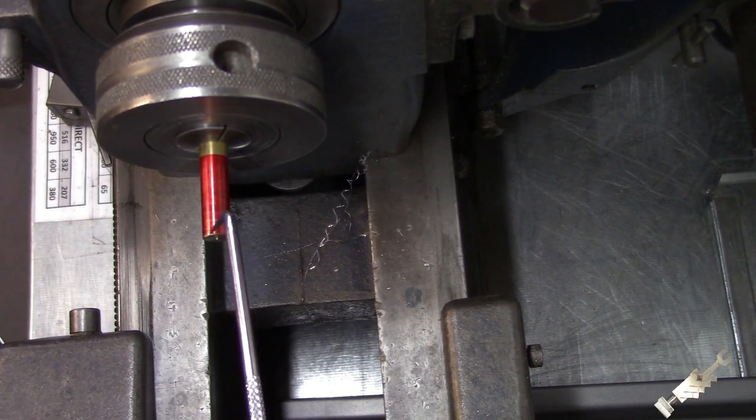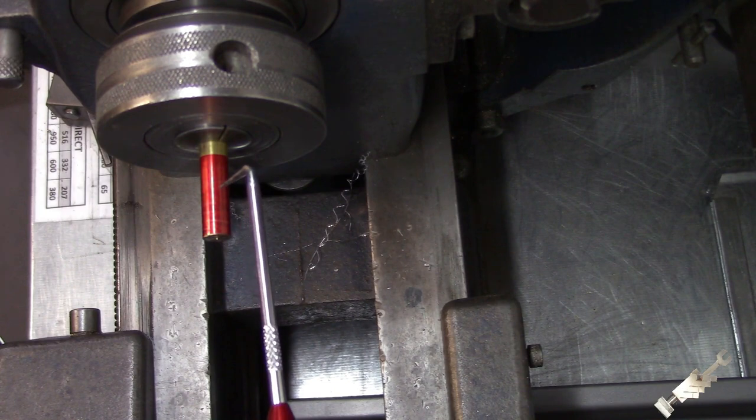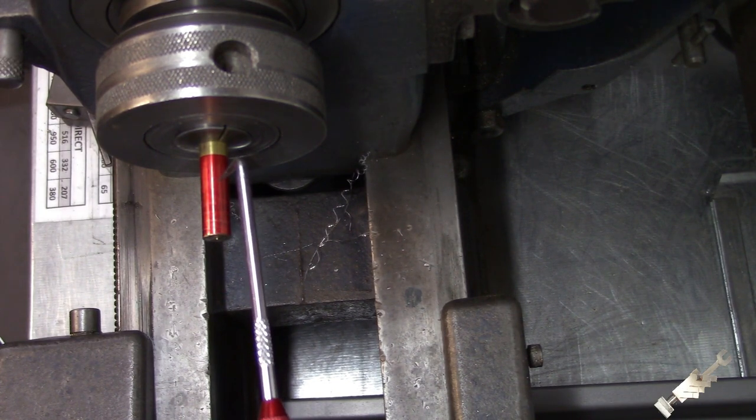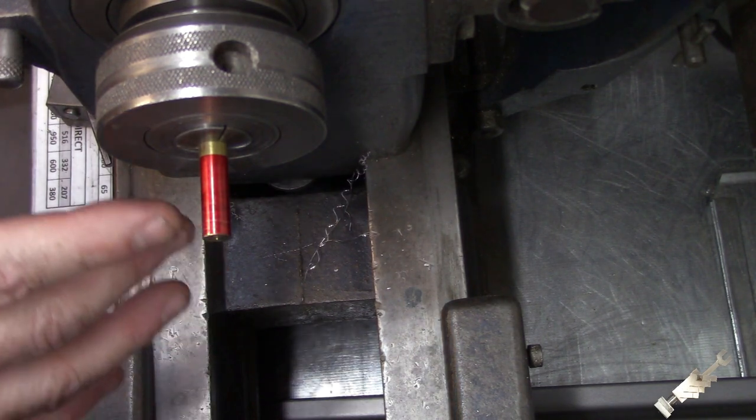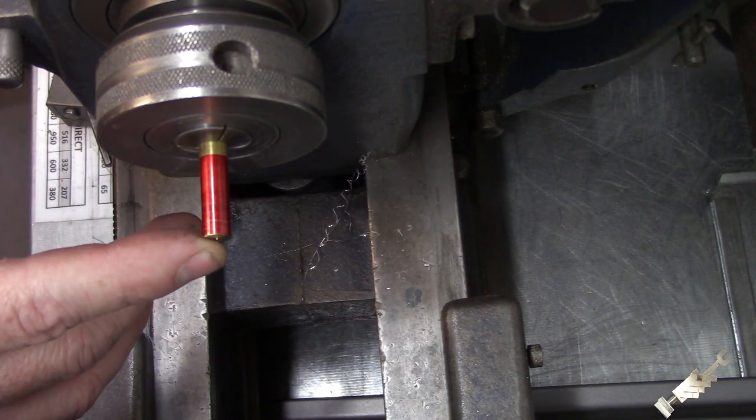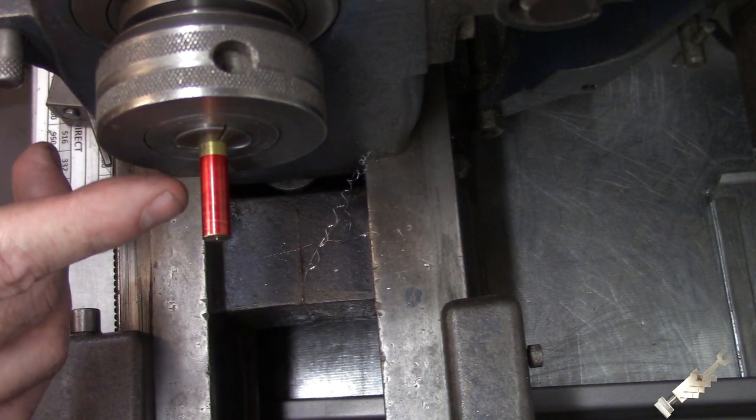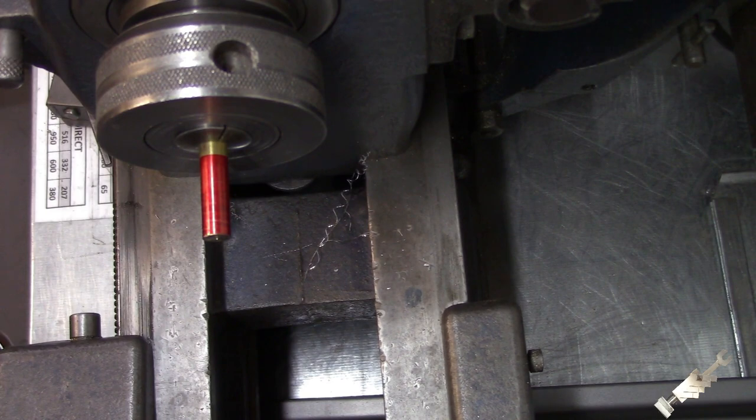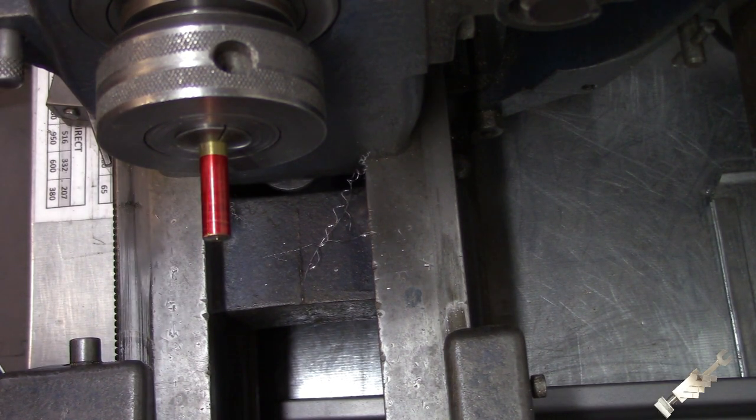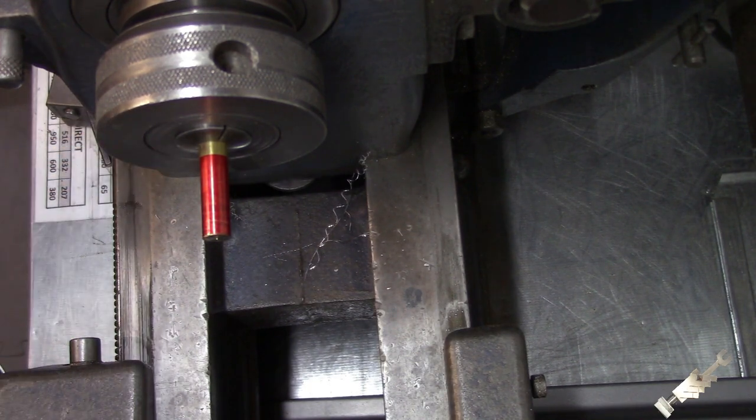To start, we got to turn this down to 96 thousandths diameter for length of 7/16s. And then when we got that turned down, we'll put a 3-48 thread on that with a die. And then after that I'll show you how we're gonna go about cutting the ball end on that.